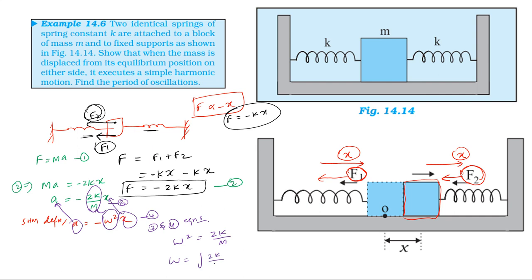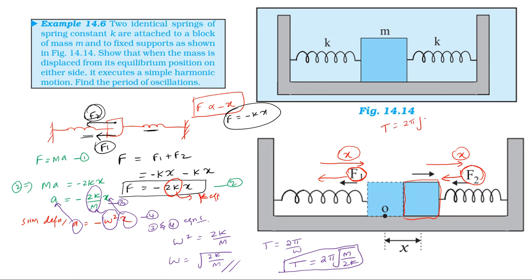Time period equals 2 pi divided by omega. Therefore, time period equals 2 pi into the square root of m divided by 2k. The effective spring constant is 2k. So the time period equals 2 pi times the square root of m divided by 2k, where m is the mass of the block and k is the spring constant.